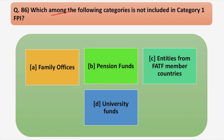The first question asks: which among the following categories is not included in Category 1 of FPI? If you are following my series regularly, you must know that in the previous video I talked about Category 1 FPI and Category 2 FPI. This is a revision question, and I hope you'll be able to answer it if you followed the previous video.